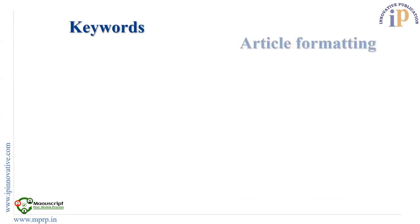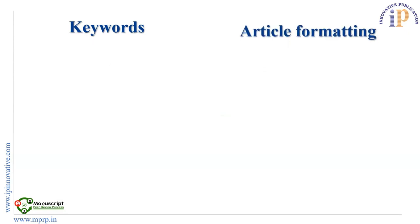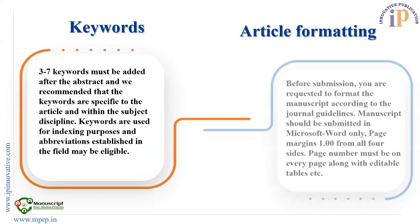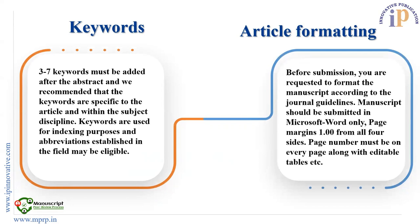Keyword preparation and article format are two very important parameters. Keywords must be added to the paper, and we recommend that keywords should be specific to the journal and the subject discipline. Keywords are used for indexing purposes, so abbreviations established in the field may be eligible, and generally we ask for three to seven keywords. For article formatting before submission, always check the journal's guidelines and author guidelines. We ask for articles in Word file format, with page margins of one inch from all four sides, page numbers included, along with editable tables and figures.